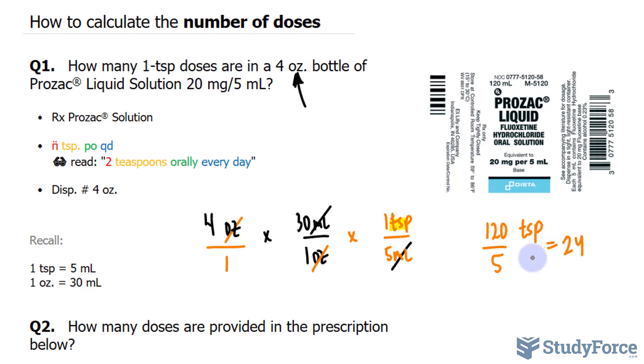So for a bottle containing four ounces of fluid, that's equivalent to 24 teaspoons, 24 one-teaspoon doses. Let's move on to question two.